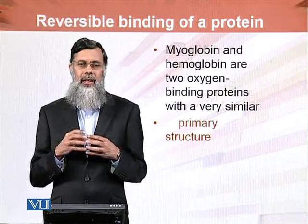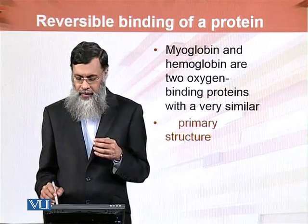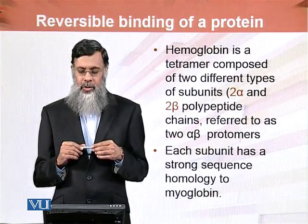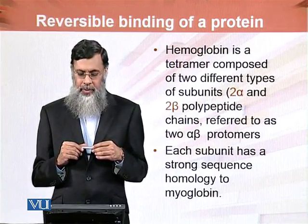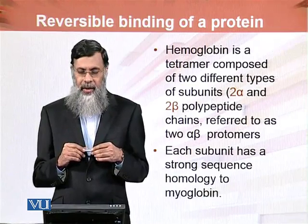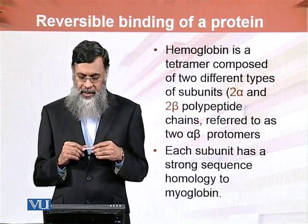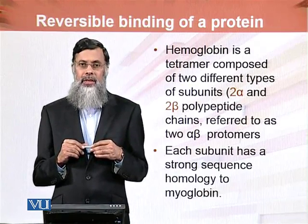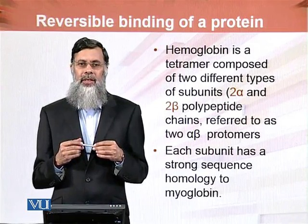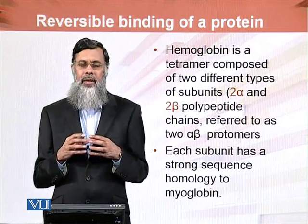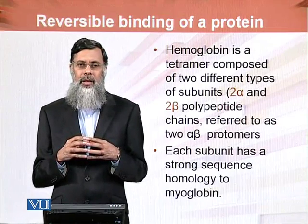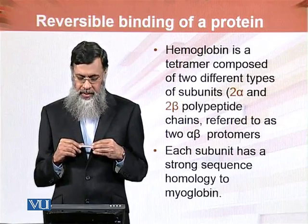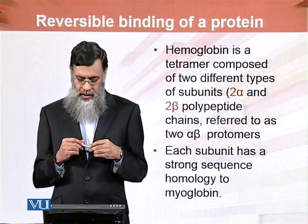The similarity between myoglobin and hemoglobin sequences is called structural homology. Hemoglobin is a tetramer composed of two different types of subunits — two alpha and two beta polypeptide chains — referred to as two alpha-beta protomers. Each subunit has strong sequence homology to myoglobin.